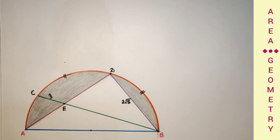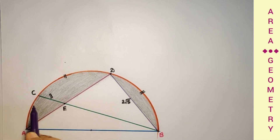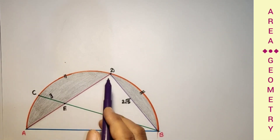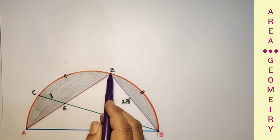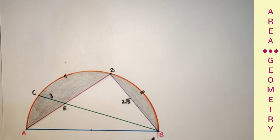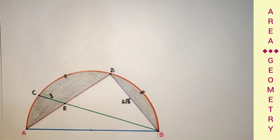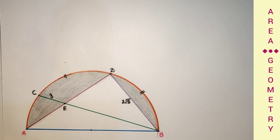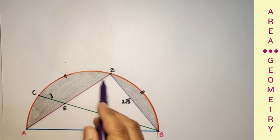Hello viewers and welcome to my channel. In today's problem we are given a semicircle with AB as diameter. C is any point on the circumference of the semicircle. The minor arc BC is divided into 2 equal parts, so D is the midpoint of arc BC, meaning arc BD equals arc DC. The length of AC is given as 3 units, while the length of BD is given as 2√5 units.